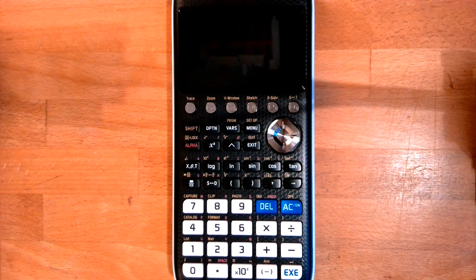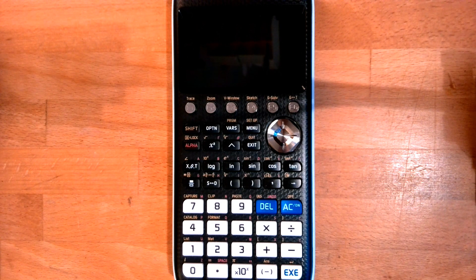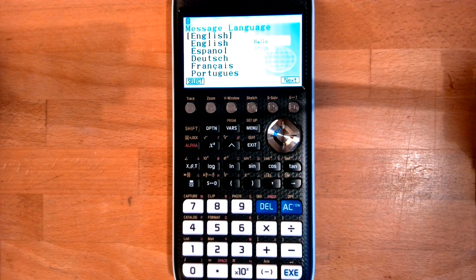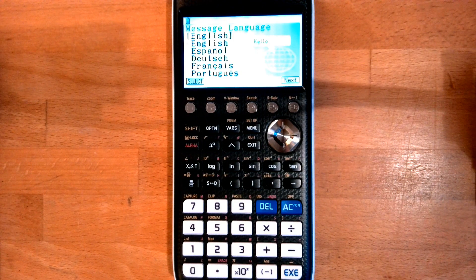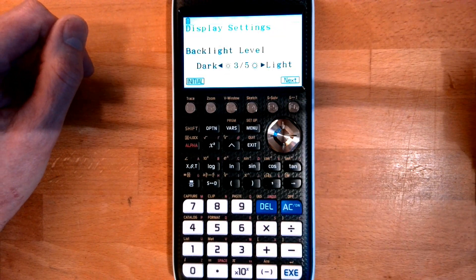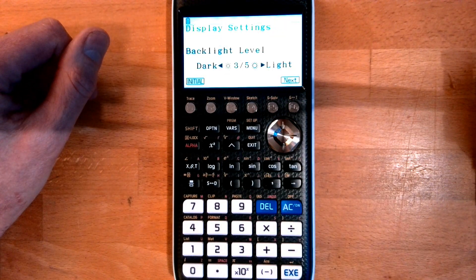Okay, so let's set up your new graphical calculator. I'm going to turn it on. You're going to choose English - it's currently selected as the language, so we go next. Backlight, well you can make it darker or brighter if you want to.